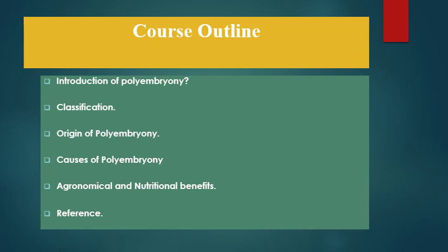Here is the course outline for this lecture. First, we will discuss the introduction of polyembryony, then its classification, followed by the origin of polyembryony, the causes and factors which cause polyembryony, and the agronomical and nutritional benefits we get from polyembryony. At the end, references are present to help you understand this lecture.